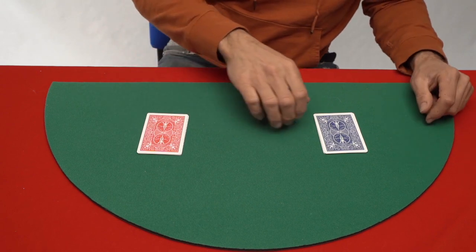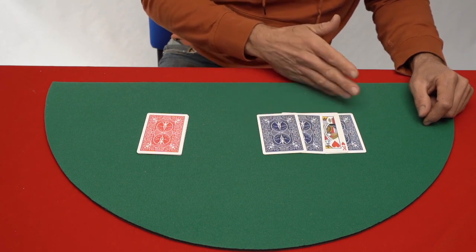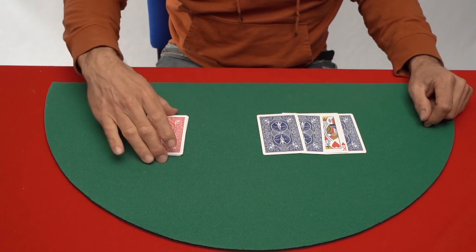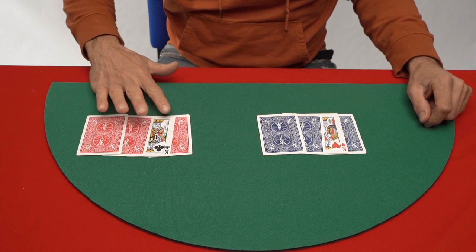Now look at my predictions. Hearts. And over here, the king of clubs that you thought of.